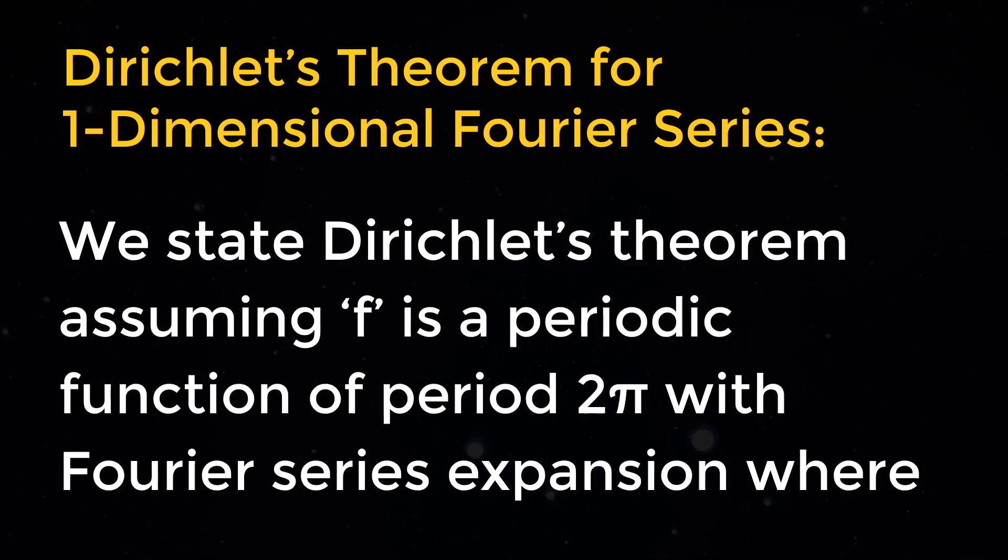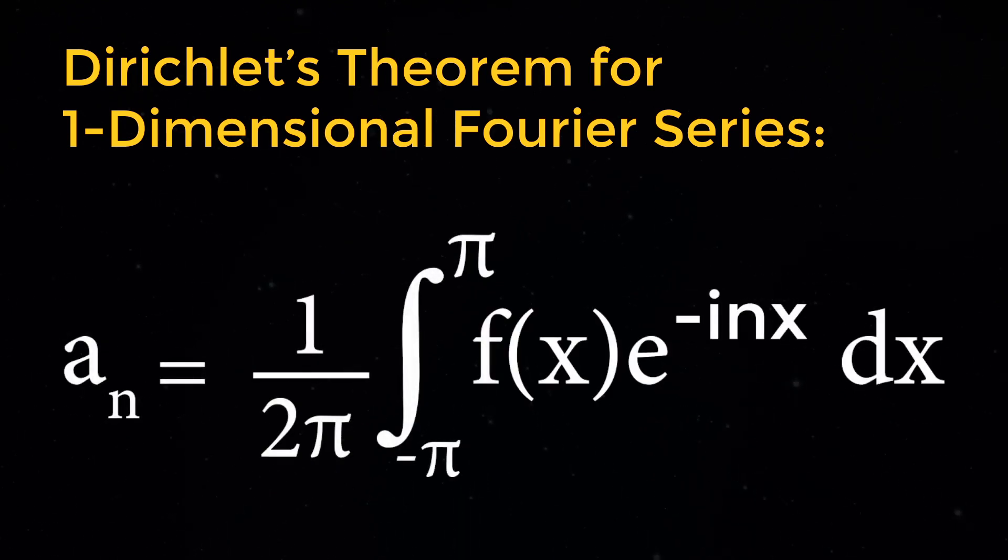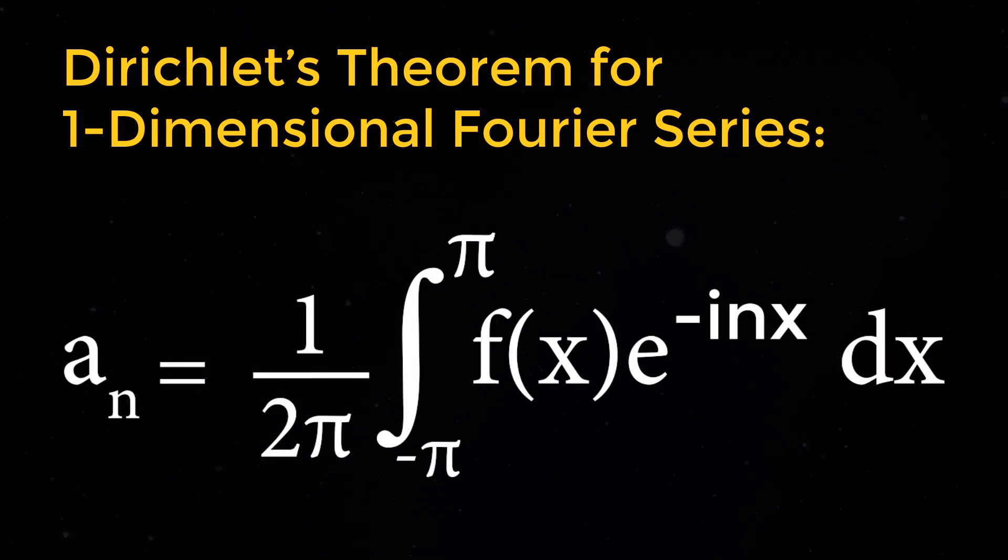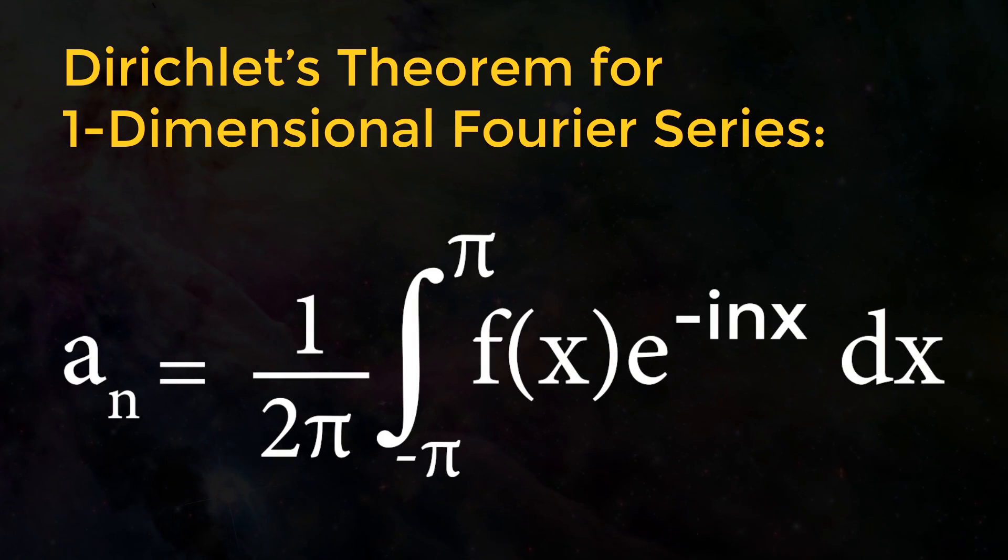where A_n equals 1 by 2π into integral of minus π to π of f of x into exponential of minus i n x dx